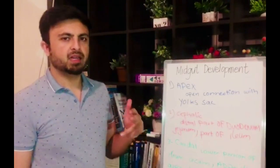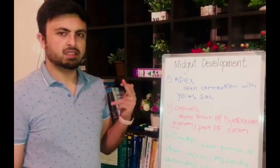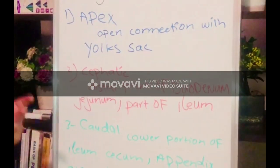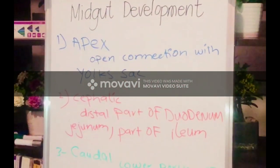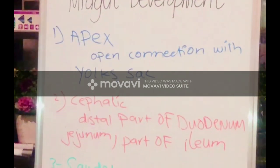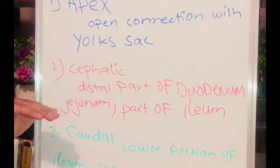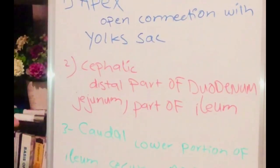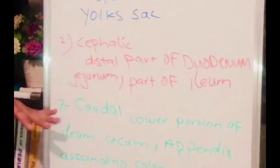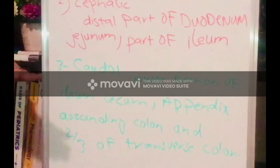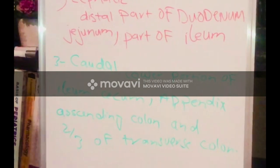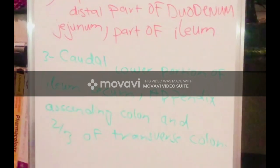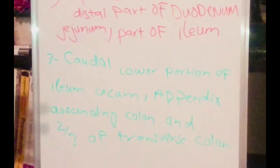The regions of the primary intestinal loop are: the first region is the apex, the second is the cephalic region, and the third is the caudal region. The apex stays in open connection with the yolk sac. The cephalic region develops into the distal part of the duodenum and some part of the ileum. The caudal region develops into the lower portion of the ileum, the cecal section, the appendix, the ascending colon, and the two-thirds of the transverse colon.